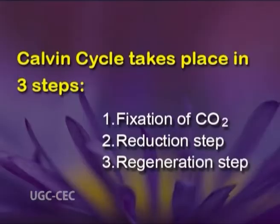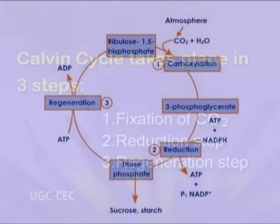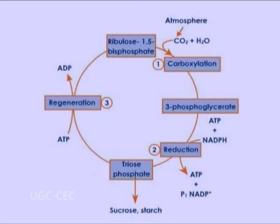The Calvin cycle takes place in three steps: fixation of carbon dioxide, the reduction step, and the regeneration step. The Calvin cycle is also called the C3 cycle because a 3-carbon compound is the first stable product in this cycle.